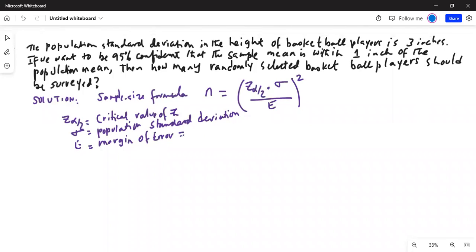The margin of error equals sample mean minus population mean. Now, how do I get the critical value of z? The confidence level in this case is 0.95.